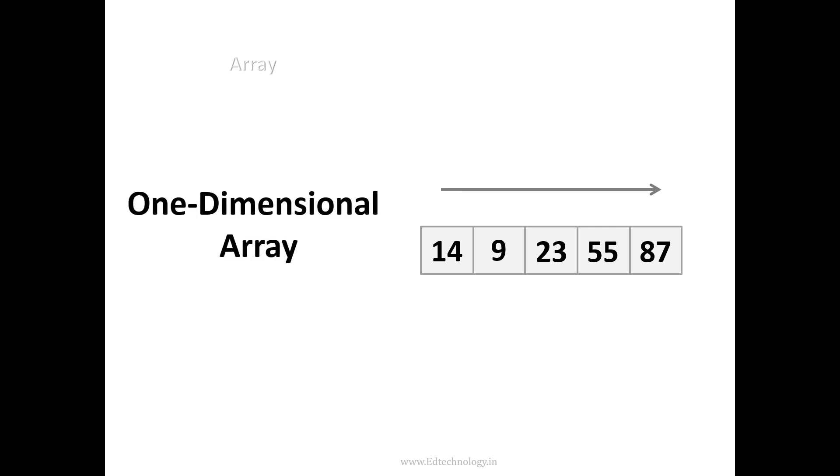In order to declare a one-dimensional array we need a type. So we are also parallelly seeing an example. Type is the data type of the variable which you want to store in the array. As I mentioned in the earlier video, I am repeating again - array can only store single type of data. So that is the integer we are declaring here, then the variable name.